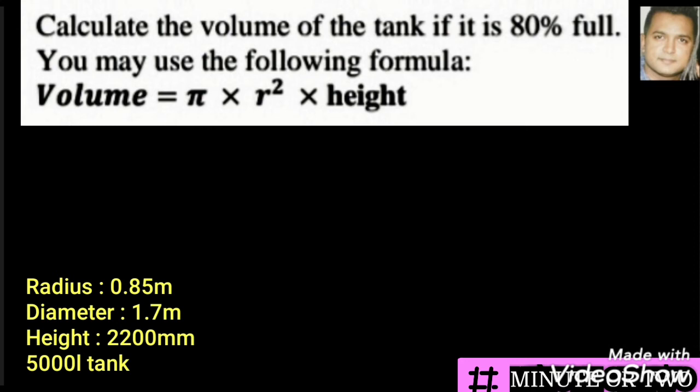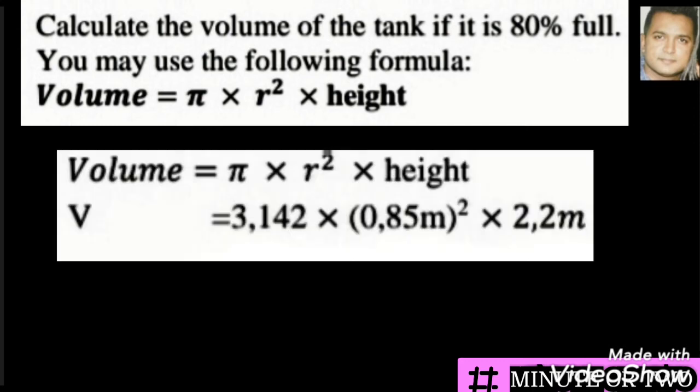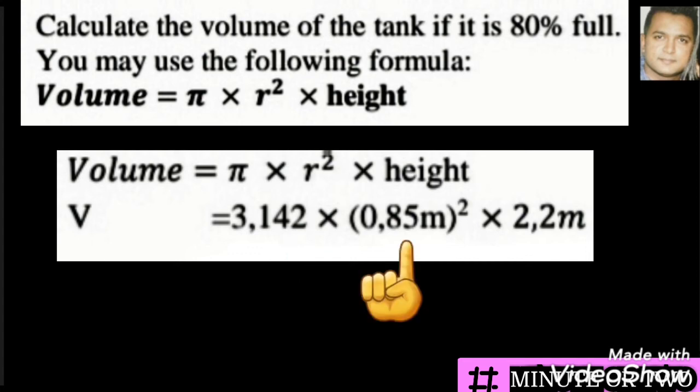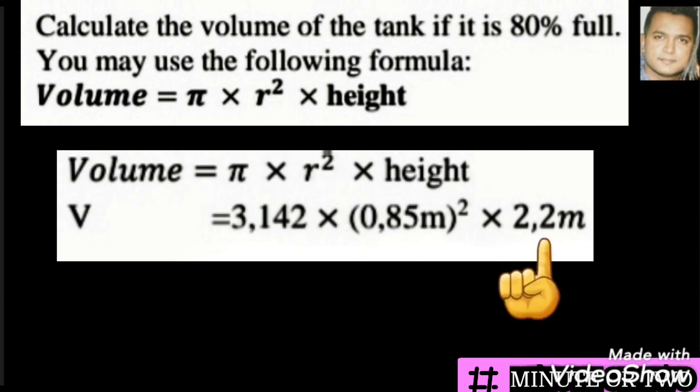Calculate the volume of the tank if it is 80 percent full, using the given formula. There are two ways to do this, but we will first find the total volume using the formula and then find 80 percent of that answer. We substitute pi, our radius of 0.85 meters, and our height.